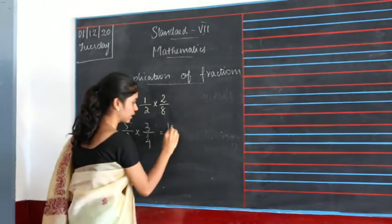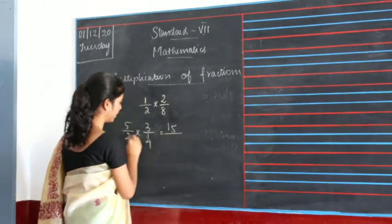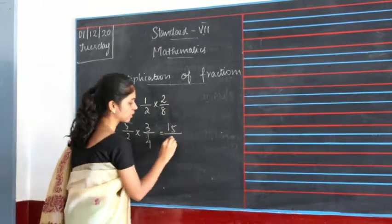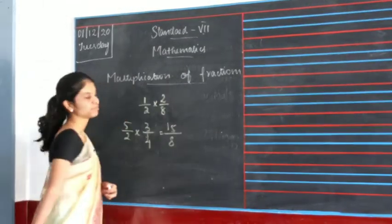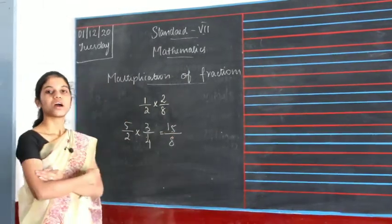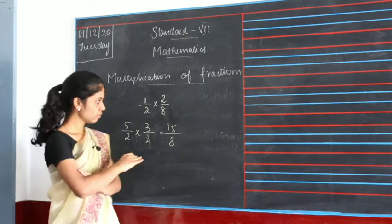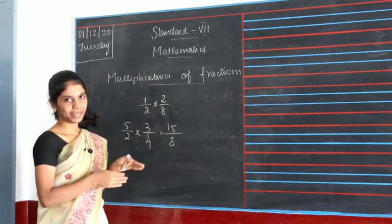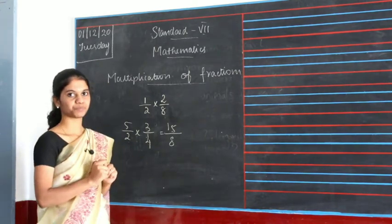5 threes are 15, divided by 2 fours are 8. So this is how we multiply fractions.